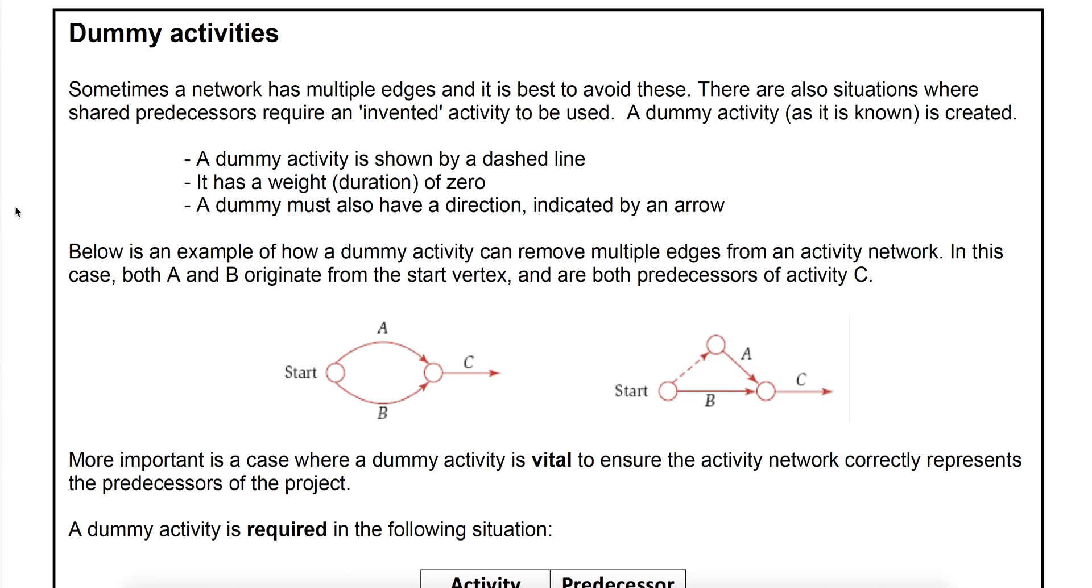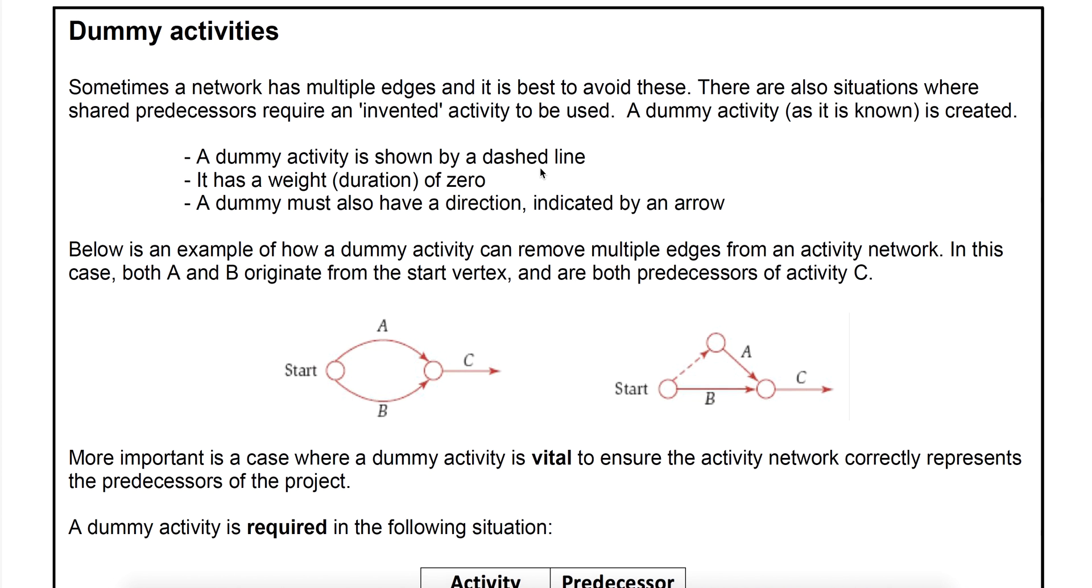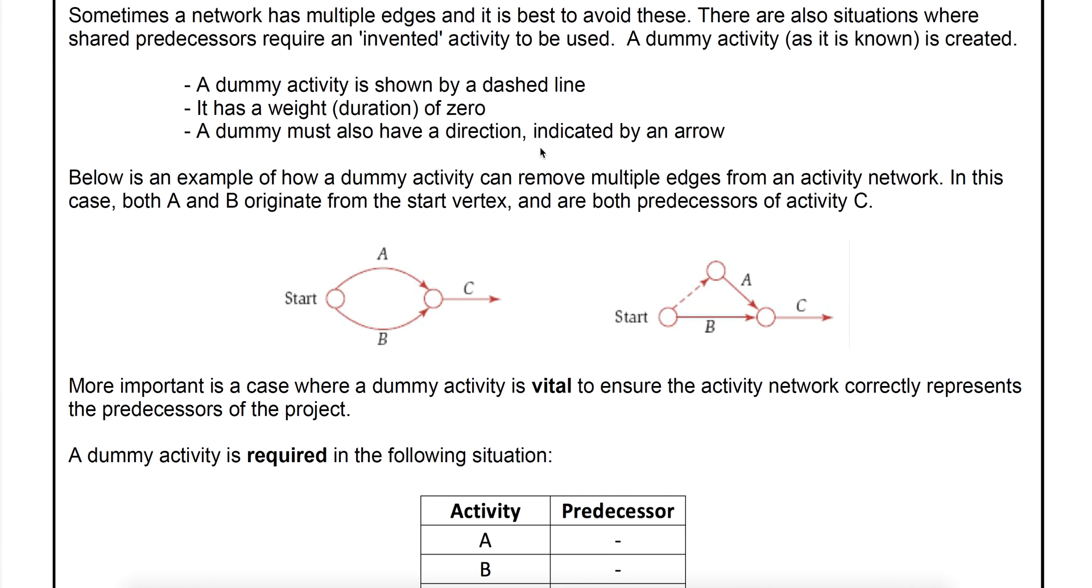We will use a dashed line for a dummy activity so that shows the reader of the network that it is a dummy, that it's invented and it's not actually happening. Because it's not happening it won't have a duration or it'll have a duration of zero. It does need to have a direction like every other edge that you draw in your diagram.